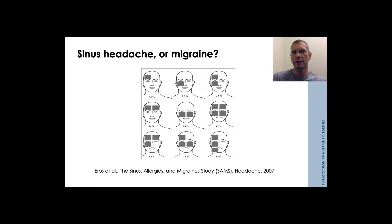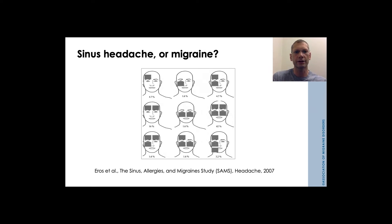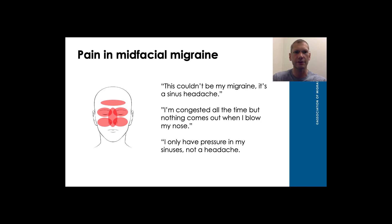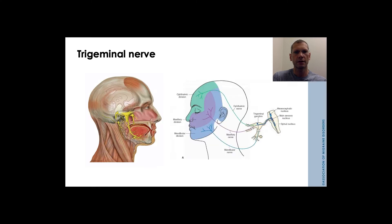Often this headache is pressure-based more so than pain or throbbing, which can be confusing for patients with a prior history of more classic migraine. They may now have a pressure sensation in the mid-face, forehead, and behind the eyes, whereas their prior migraines were temporal or occipital with a different quality. Pain in mid-facial migraine presentations may be a different location, different quality — pressure rather than pain — and may last for a different length of time. I frequently see this in patients with more chronic or chronified headache presentations. Patients will say, 'This couldn't be my migraine — it's a sinus headache, it's different. I'm congested but nothing comes out when I blow my nose.' This all makes sense when we think about the biology of migraine.